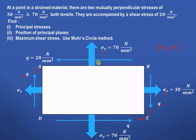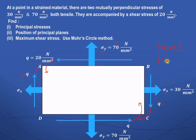Now considering plane AB, there is a normal stress — sigma y — which is tensile, so that is positive: 70 N/mm². But the shear stress Q on this plane goes in the anticlockwise direction, so it is negative. Therefore, plane AB has a positive normal stress of 70 and a negative shear stress of −20, giving us the pair (70, −20).